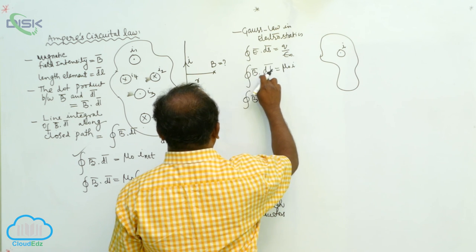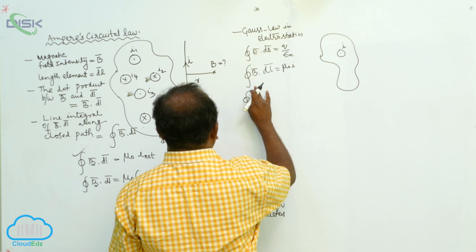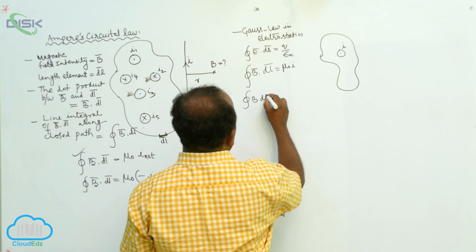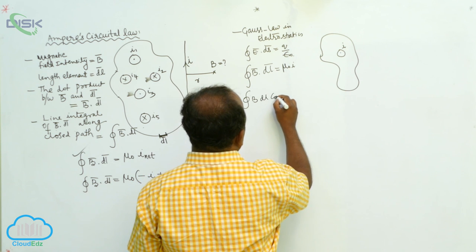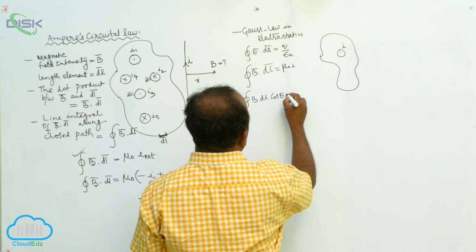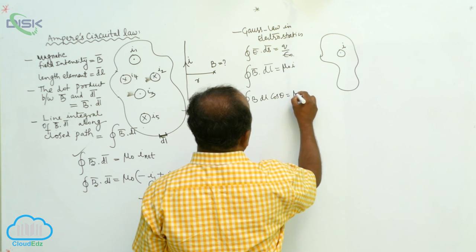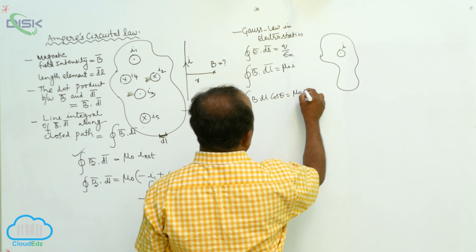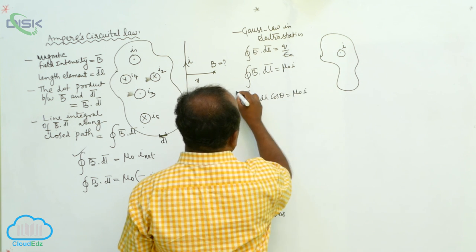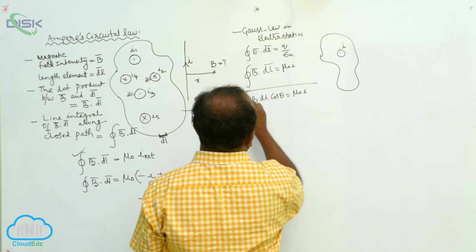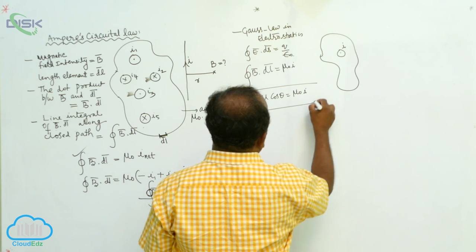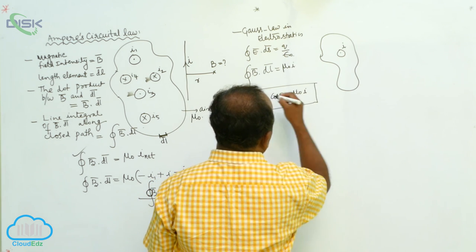Since A dot B equals AB cosθ, we get B dl cosθ equals mu-naught I. Therefore this is the statement of Ampere's Circuital Law.